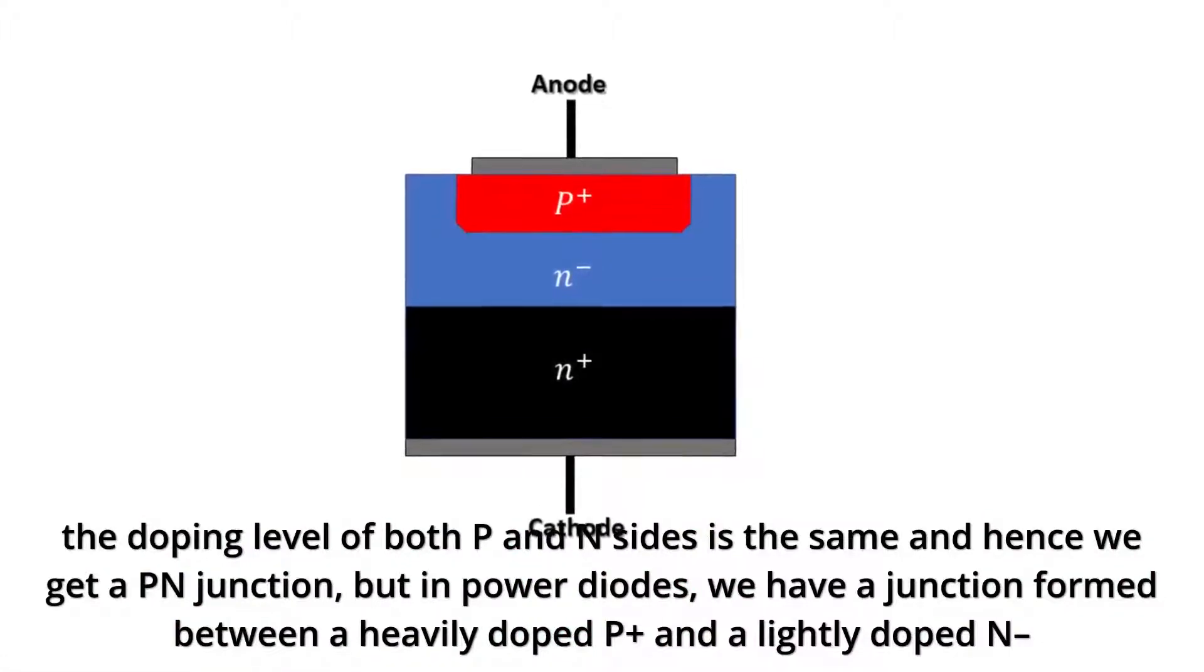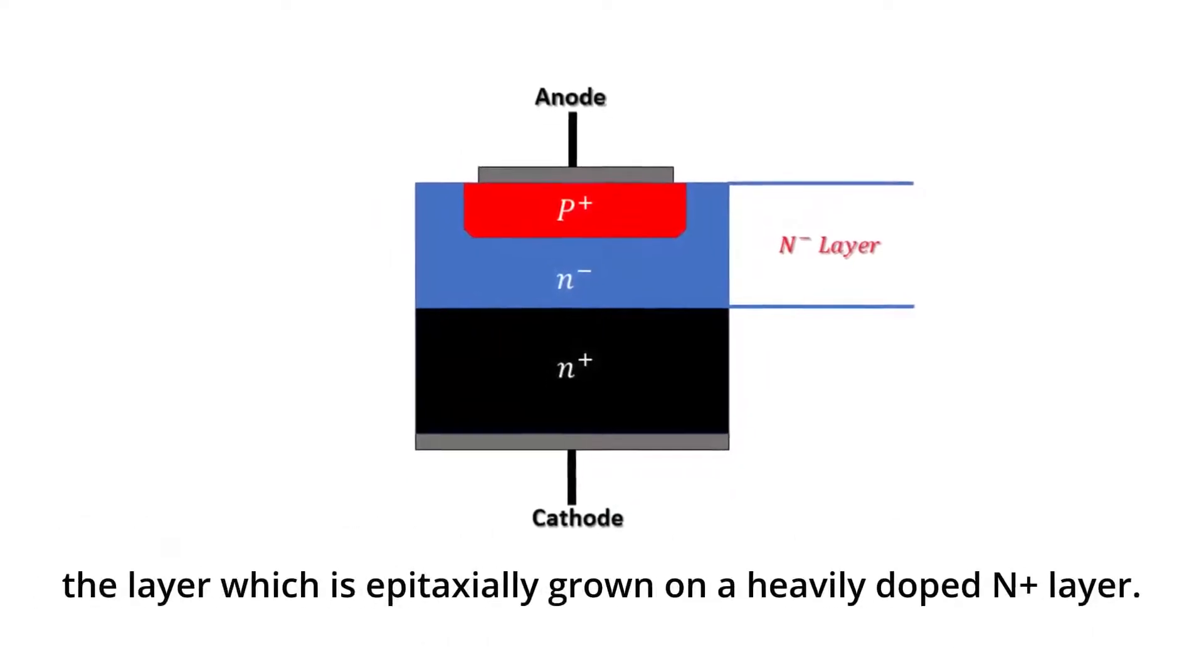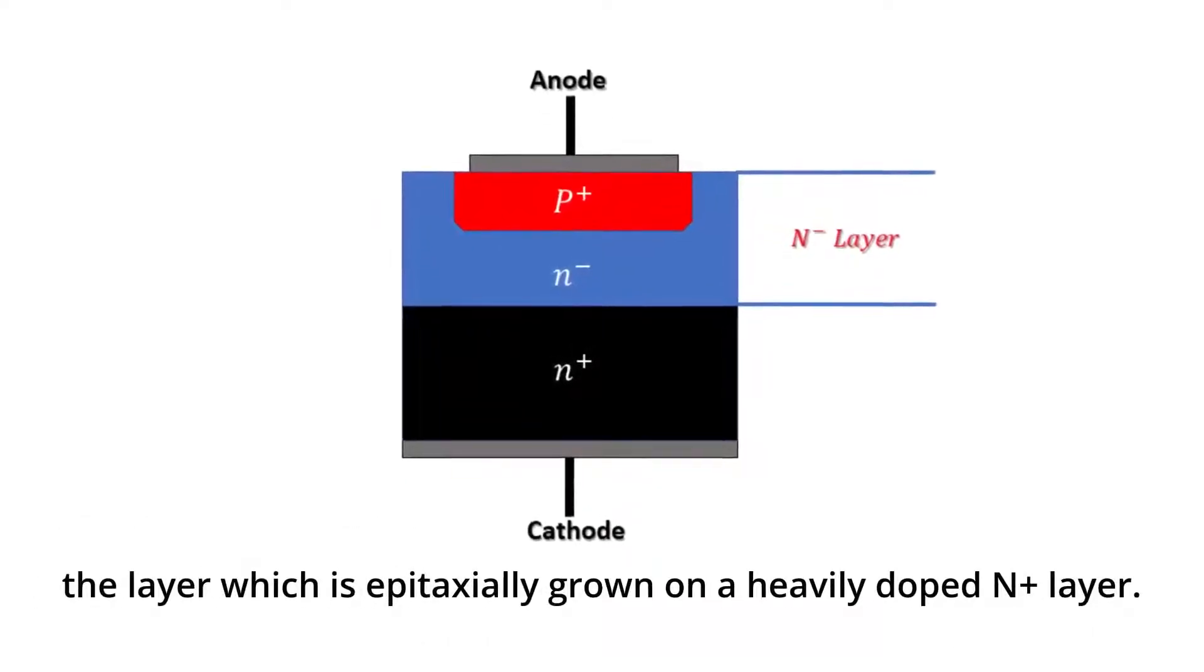But in power diodes, we have a junction formed between a heavily doped P+ and a lightly doped N- layer which is epitaxially grown on a heavily doped N+ layer.